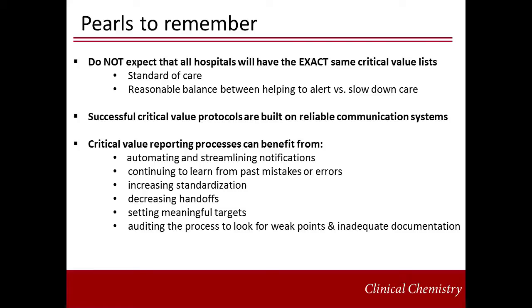In summary, critical value protocols lack uniform critical value lists. Regulatory agencies have allowed for autonomy, and this is consistent with the individual practice needs of different hospitals. But laboratories should be able to gather enough data locally or nationally for comparison and determine what is reasonable for their system while maintaining a standard of care. Building reliable communication systems is the key to success of any critical value protocol. With the goal to make them as reliable and robust as possible, systems can improve critical value reporting processes by automating and streamlining notifications, learning from past mistakes, increasing standardization, decreasing handoffs, setting meaningful targets, and auditing records to look for weaknesses and inadequate documentation.